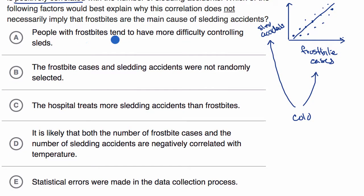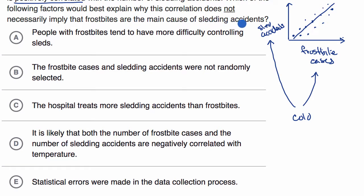The first choice says: people with frostbites tend to have more difficulty controlling sleds. Well, if that were true, that would actually support the causality argument — that frostbite is a major cause of sledding accidents. But we want to explain why this correlation does not necessarily imply that frostbites are the main cause of sledding accidents. So this is not what we would want to pick.